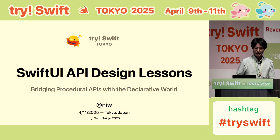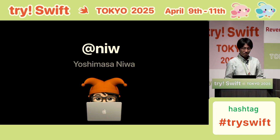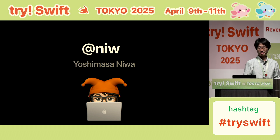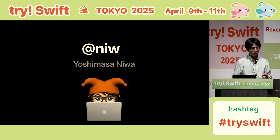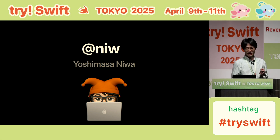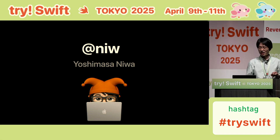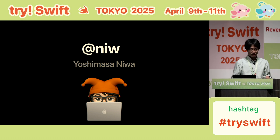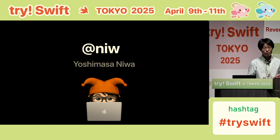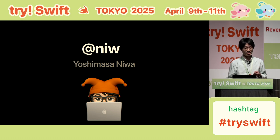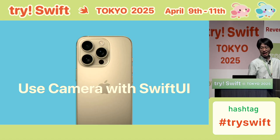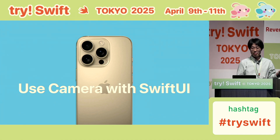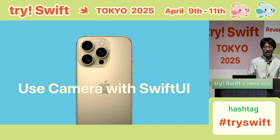Good morning, everyone. I'm Yoshi, and you might know me as AdninaW on Twitter. Let me quickly introduce myself. I've been developing for the Apple platform, especially iOS, for more than 10 years now. I started with Objective-C and now mostly using Swift. Today, I wanted to talk about SwiftUI and the collaborative API design using the camera app as our example. It's perfect because the camera API is a traditional procedural-style API and not very declarative.